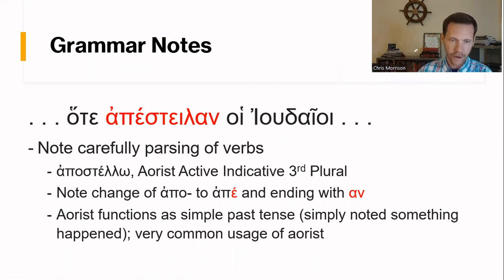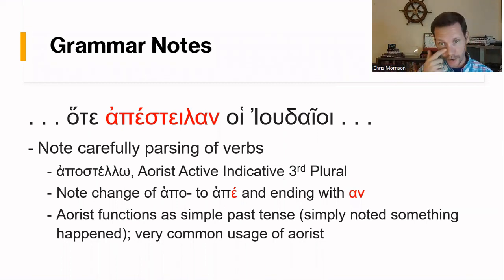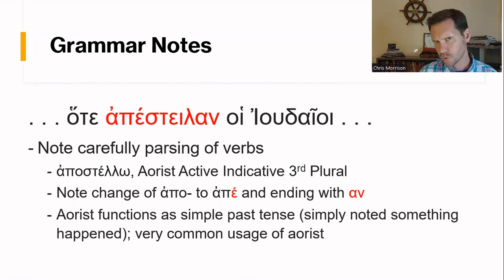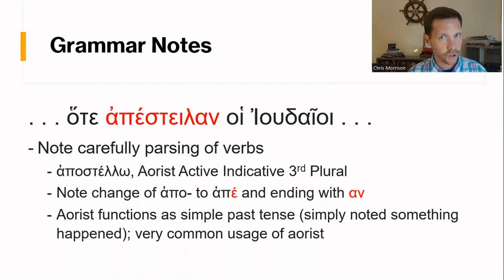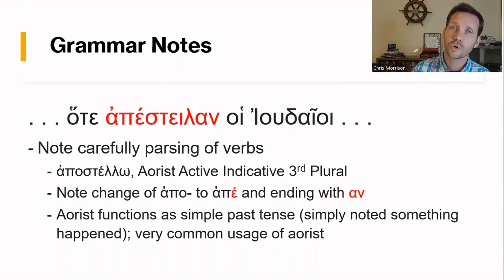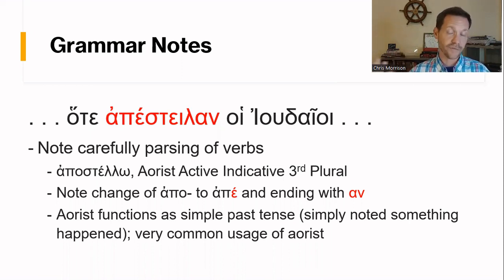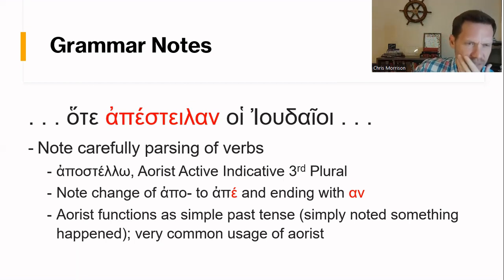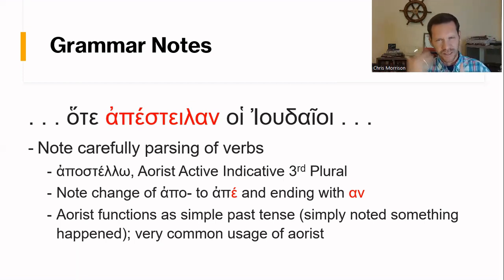You can think of the aorist as functioning as a simple past tense — that's a very common usage of the aorist. There are other ways the aorist is used and it doesn't always mean simple past tense, but it's extremely common. If you forget the parsing but you know apostellō means 'I send,' you can work out that apesteilan means 'they sent.' That gets you a basic translation. If you memorize the base form, tools can fill in the rest.